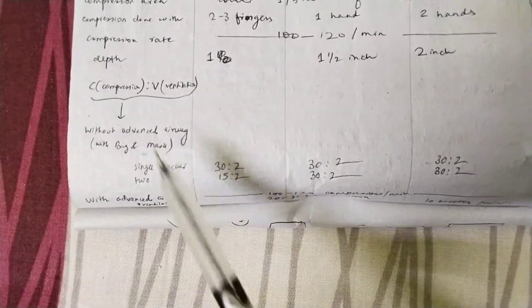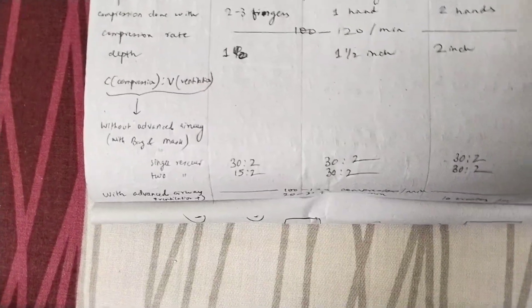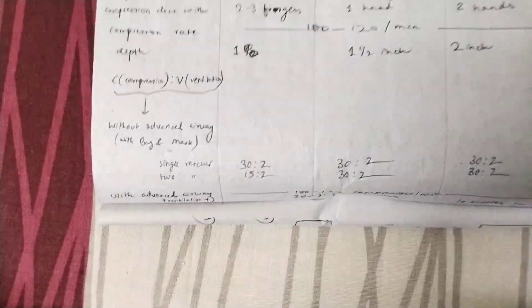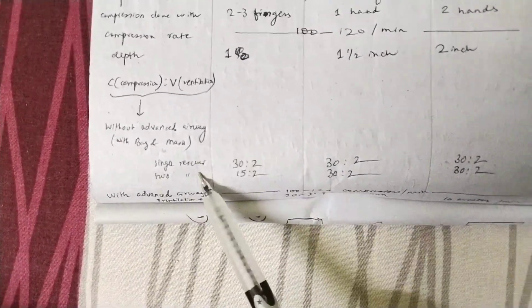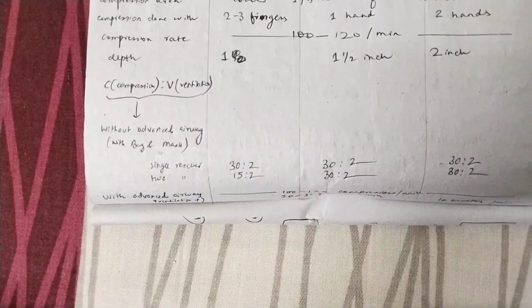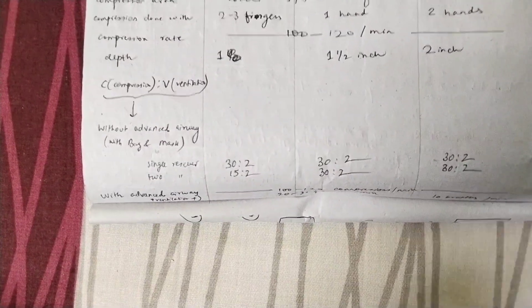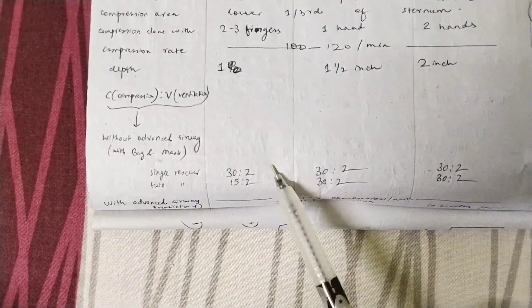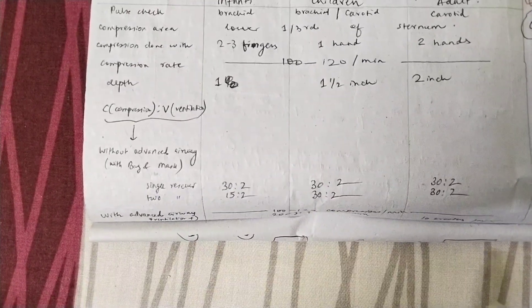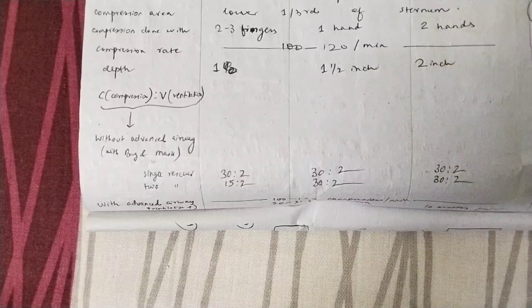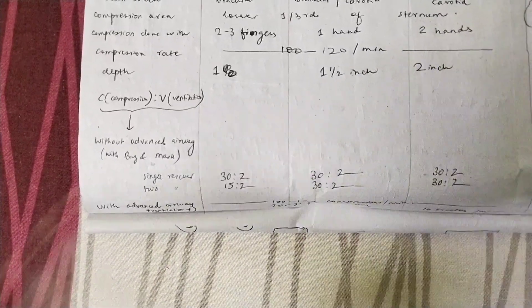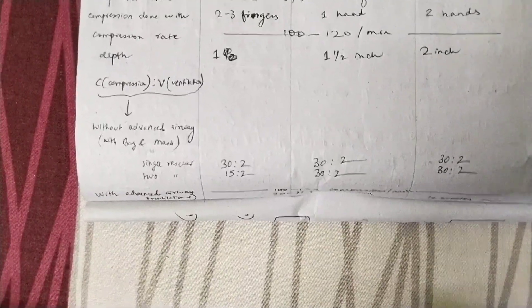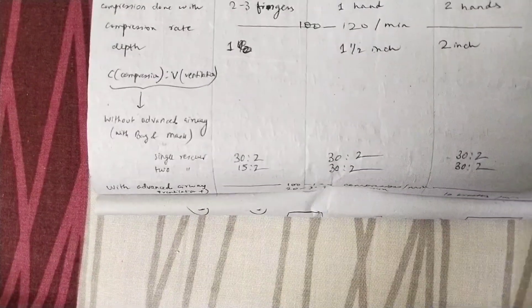For non-advanced ventilation: if you are a single rescuer, give 30 chest compressions then 2 breaths — this applies to infants, children, and adults. If you are two rescuers, for infants give 15 compressions and 2 ventilations; but for children and adults it remains 30 compressions to 2 ventilations.